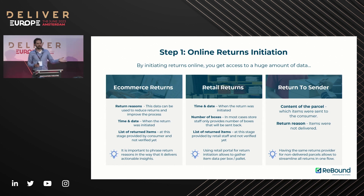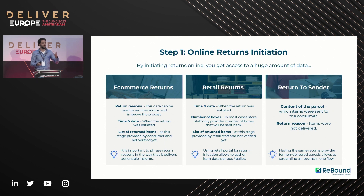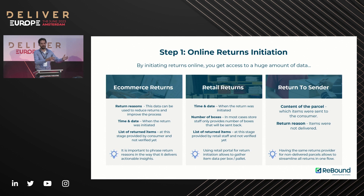What people tend to forget is return-to-sender — missed final deliveries are also a return stream. If you don't tackle that, it still means returns arriving at your DC that you didn't expect. We can make sure we capture those, register them, and know exactly what's inside. Most of the time, those products are in mint condition. So why put them with the rest of the stock? Why not give them a different lane to go faster and back into resale as soon as possible?